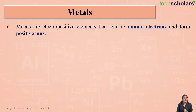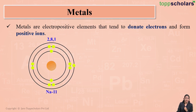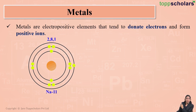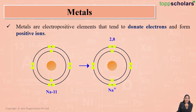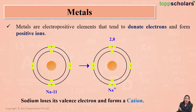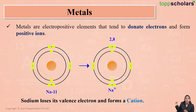Let's take an example. If I talk about sodium, the atomic number of sodium is 11, so its electronic configuration is 2, 8, 1. Sodium has one electron in its outermost shell. In order to become stable, sodium loses that one electron. When sodium loses this one electron, it forms the sodium cation, which is a positively charged ion. The outermost shell of the sodium cation now has 8 electrons, meaning sodium achieves the stable octet state.